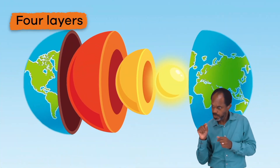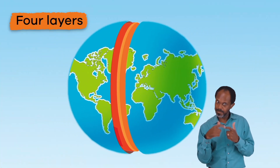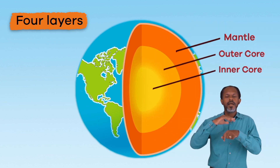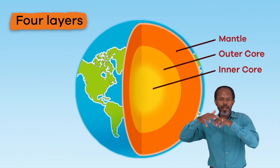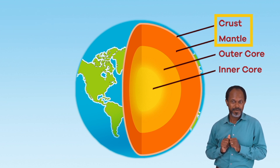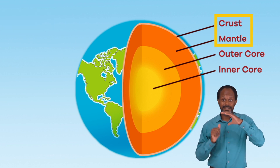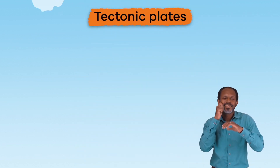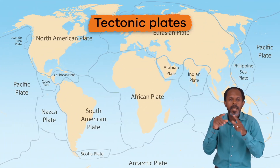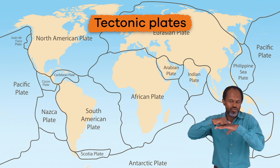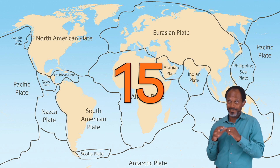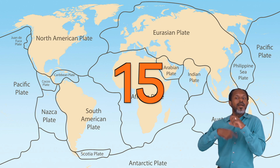The Earth has four major layers: inner core, outer core, mantle, and crust. Think of the crust and top of the mantle like the skin of the Earth. This skin is made up of different pieces of rock called tectonic plates. There are about 15 major slabs that join together, kind of like a puzzle.